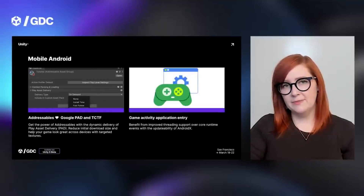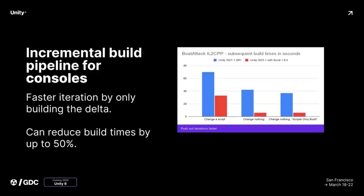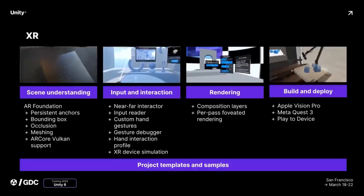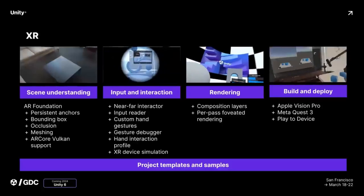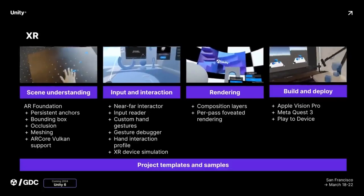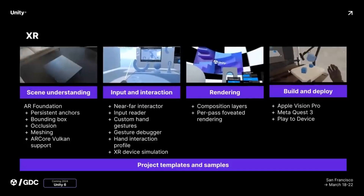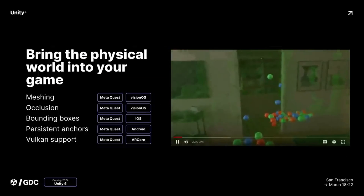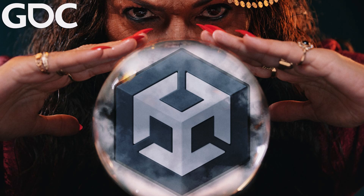In terms of console builds, there are faster console build times on IL2CPP — after your first build it can be up to 50% faster, and everyone likes faster compiles. On the XR side, there's specific support for the Meta Quest 3 and Apple Vision Pro. New XR features include foveated rendering, AR Core Vulkan support on Android, custom hand gestures, XR device simulation, support for composition layers, and the ability to render text, video UI, and images at higher quality using runtime compositor layer support.